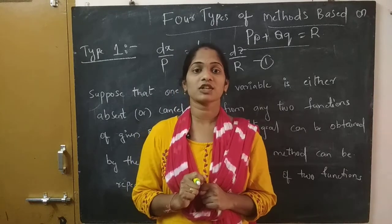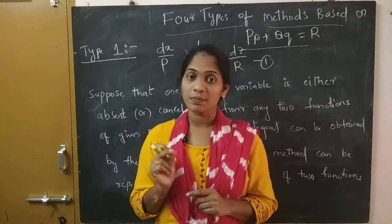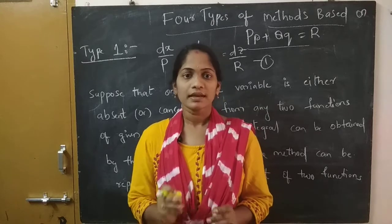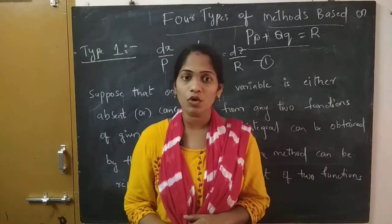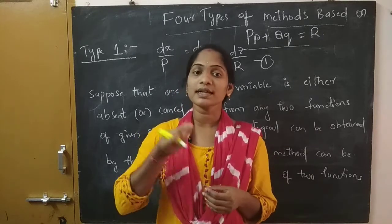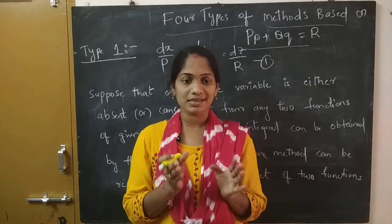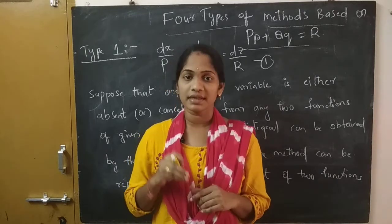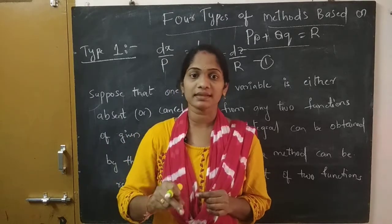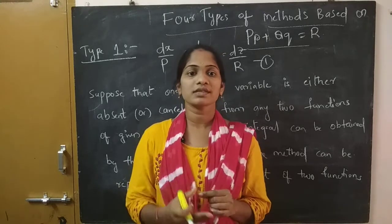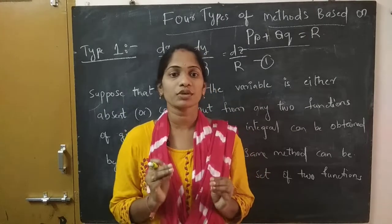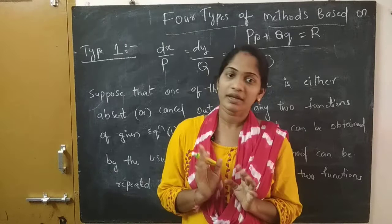As I mentioned in the previous lecture, Lagrange's method consists of four types. For any type there is no special name; the types refer to the form in which the PDE is given. After converting into the auxiliary equation, we observe it and decide how to solve it and which method to use. So using that, we decide which type it is. Now in this lecture I am going to discuss Type 1 of Lagrange's method.